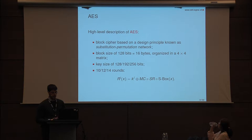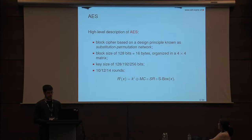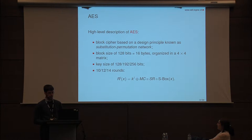The S-Box is the only nonlinear operation. Each byte is replaced by another according to this S-Box function derived from the multiplicative inverse in GF(2^8). ShiftRows and MixColumns are linear operations — ShiftRows maps diagonals to columns, and then each column is multiplied by a four-by-four matrix. Finally, we have the AddRoundKey operation, which simply adds the key. For completeness, there is also an initial AddRoundKey, and usually the final MixColumns is omitted.